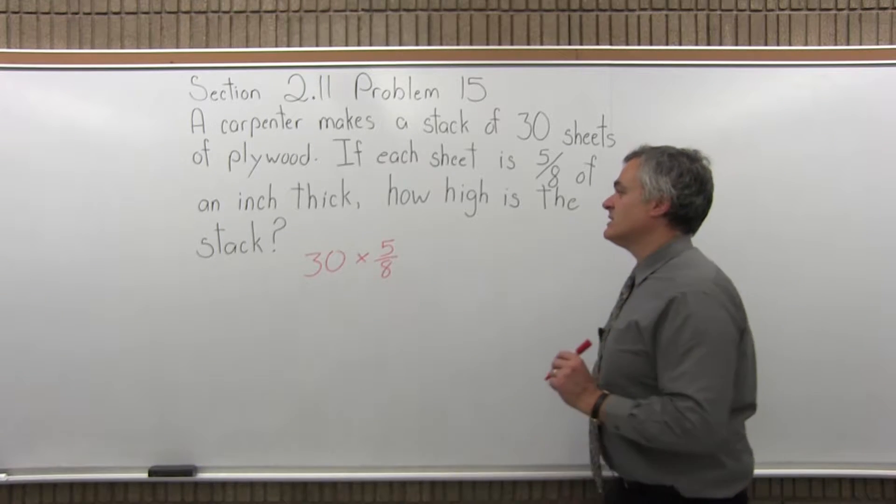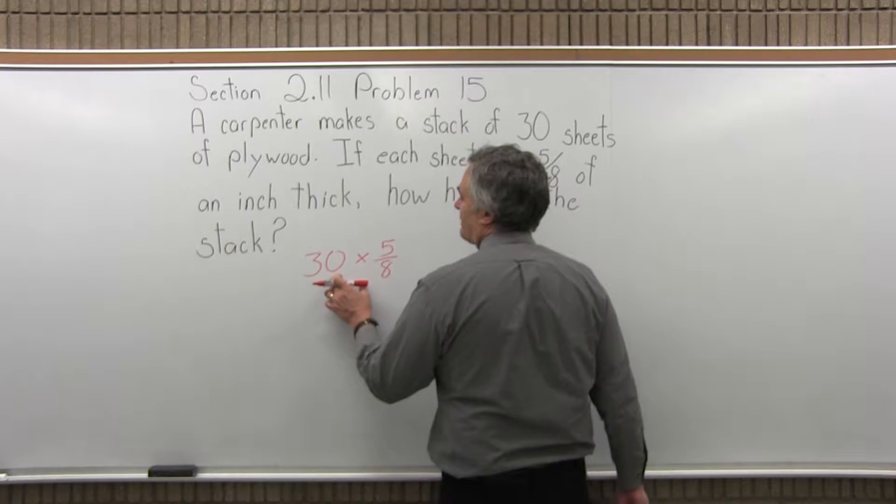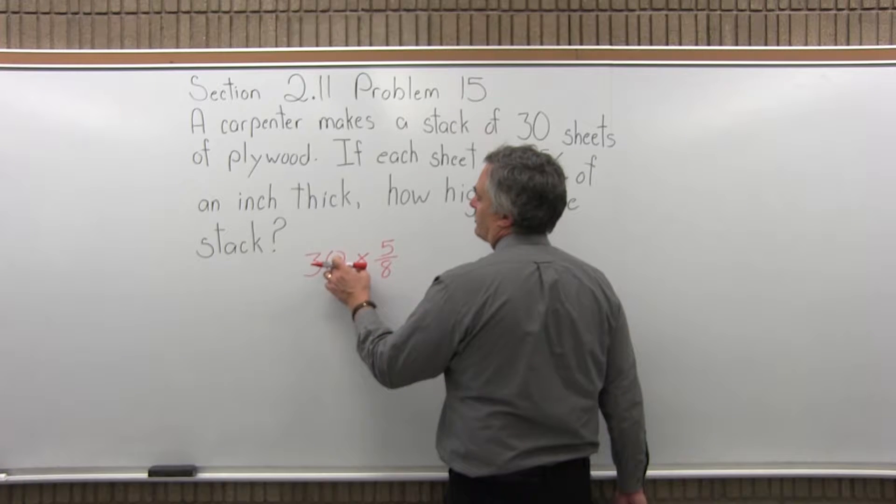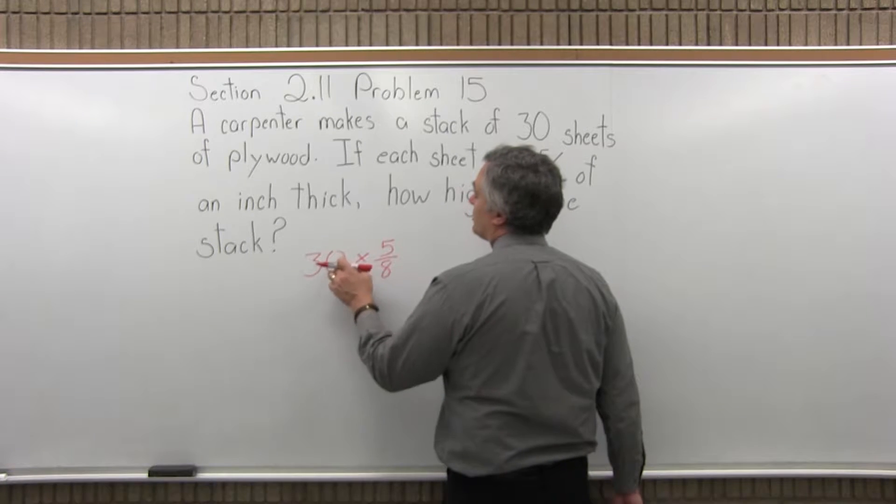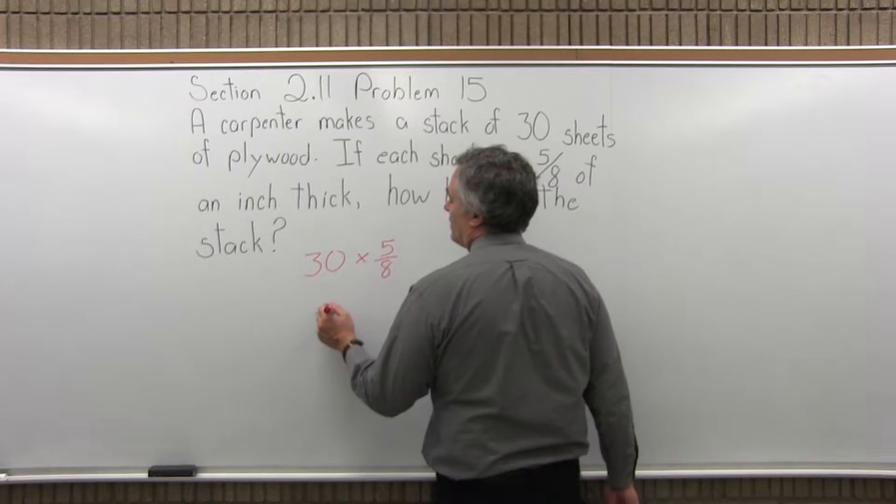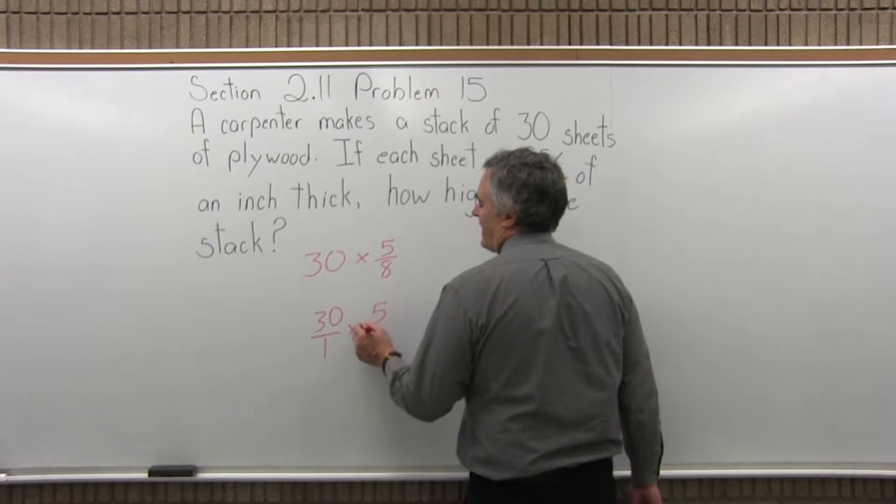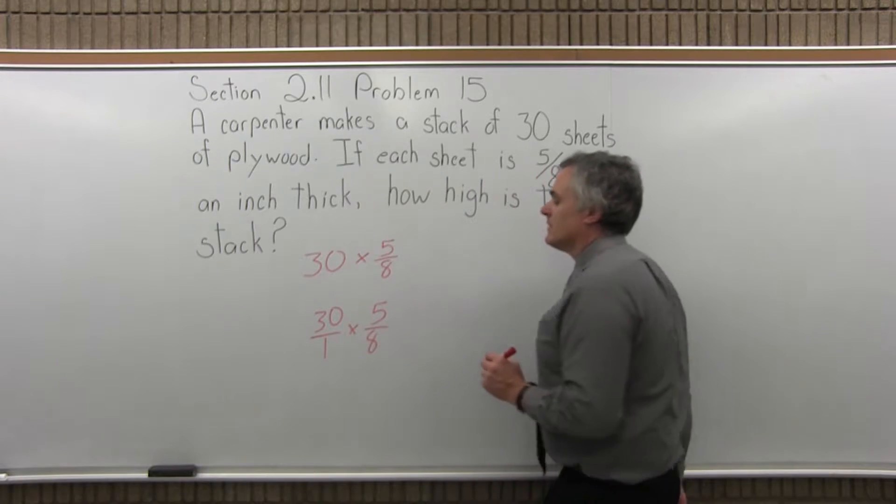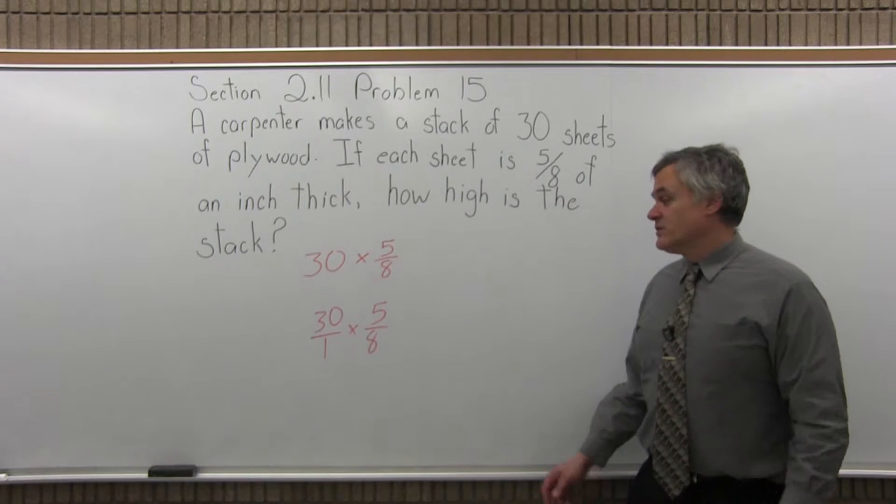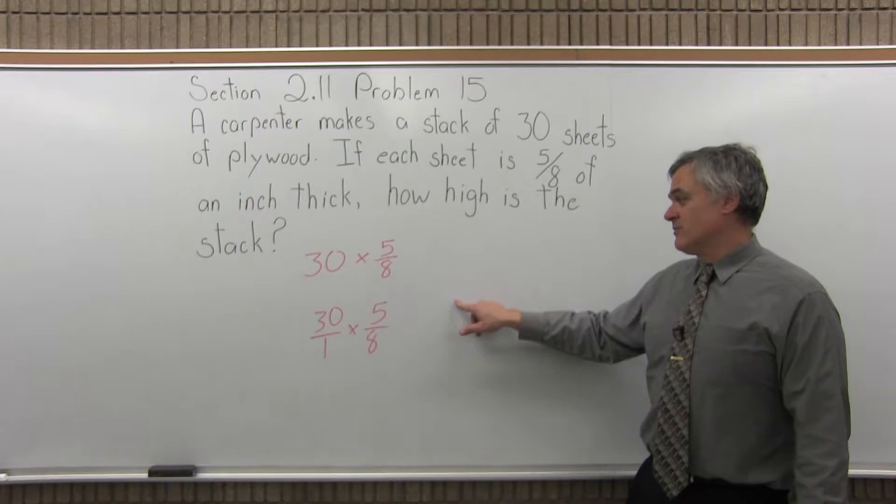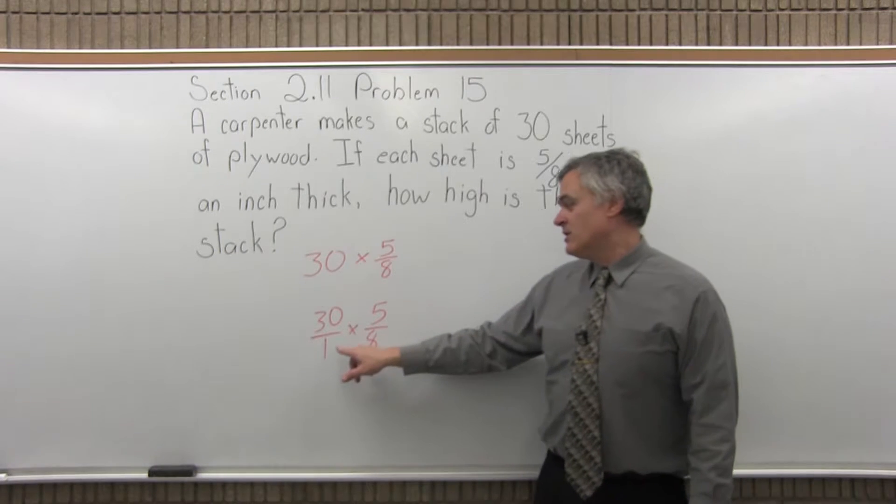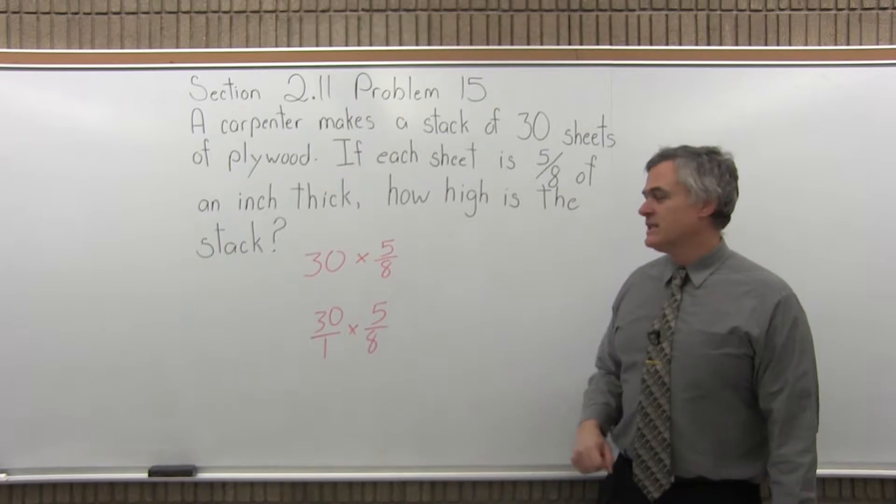30 sheets, each one is 5 eighths of an inch thick. So to multiply fractions, I really need to multiply top times top, bottom times bottom. The 30 does not have a numerator and a denominator, but I can fix that. Let's write 30 over 1 times 5 over 8. Now I have a top and a bottom for each fraction. I can multiply the tops, 30 times 5 get 150, 1 times 8 get 8, it'll reduce nicely.